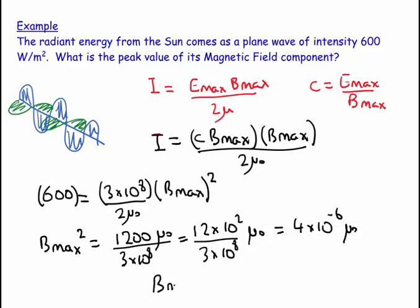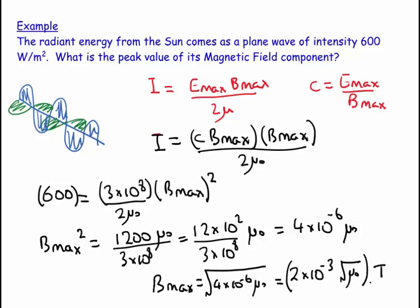B max is equal to the square root of 4 times 10 to the minus 6 times mu naught, which equals 2 times 10 to the minus 3 times the square root of mu naught. That's going to be in Tesla. I don't mind if you leave mu naught in your exam calculations.